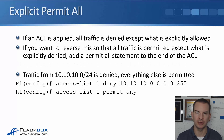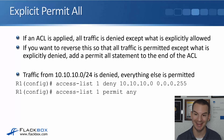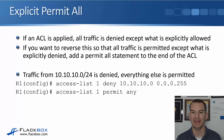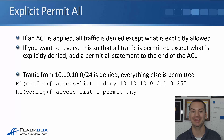With the implicit deny all, when an ACL is applied, all traffic is denied except what is explicitly allowed. If you want to reverse that — so all traffic is permitted except what is explicitly denied — add a permit any statement at the end of the ACL. For example: 'access-list 1 deny 10.10.10.0 0.0.0.255', then 'access-list 1 permit any'. Everything not explicitly denied will be permitted.